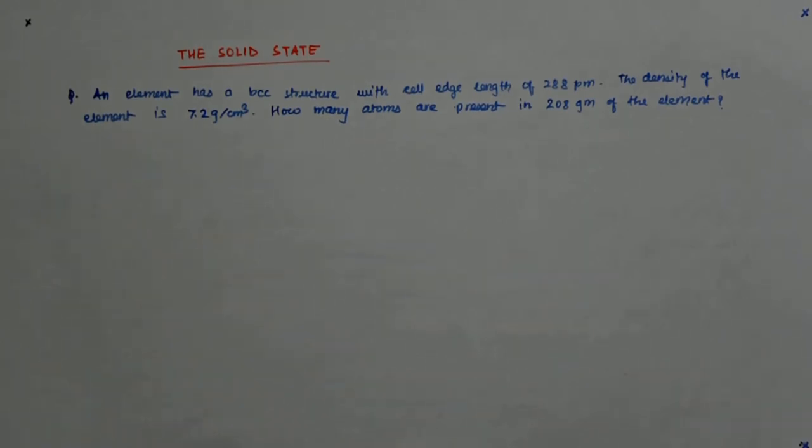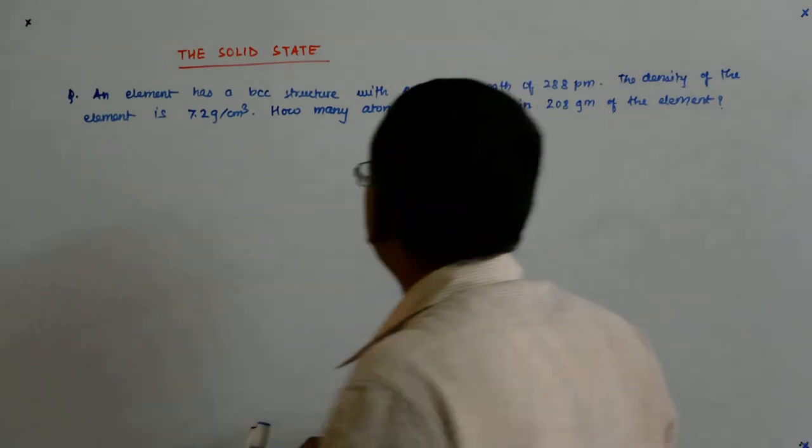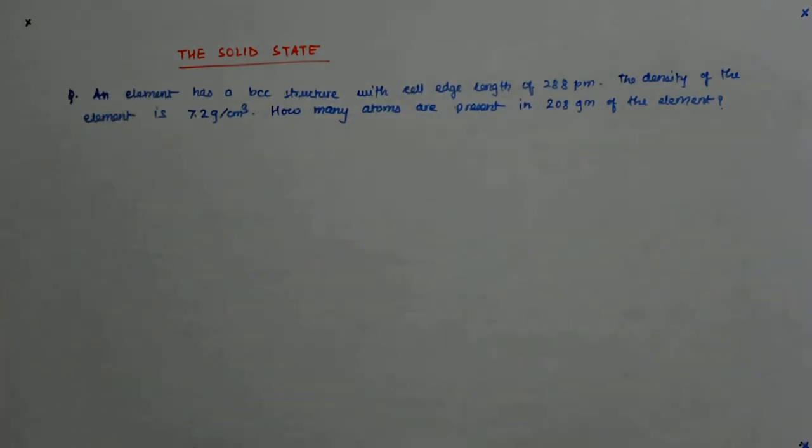Okay, so we do this question where an element has a BCC structure with cell edge length of 288 pm. The density of the material is given.